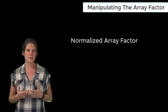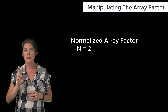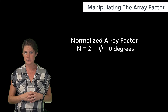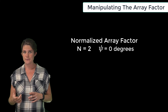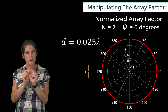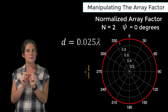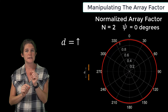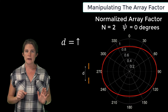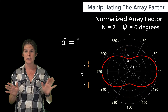First, let's look at the normalized array factor of a two-element array, so n equals two, with zero phase difference between the elements, so phi equals zero. As we saw in the earlier animation, if d is very small, this array factor is nearly isotropic. However, as the vertical spacing between the elements increases, you can see that the upward and downward radiation strength is reduced, and the radiation is compressed into the broadside direction.